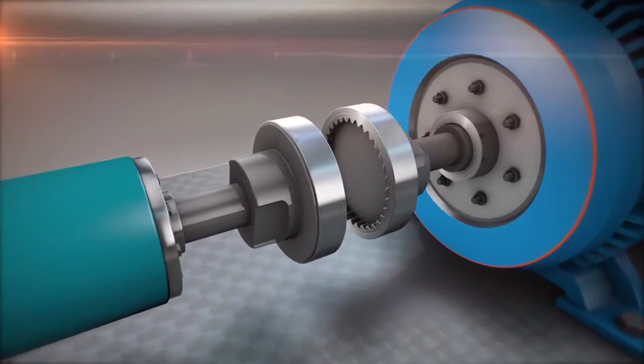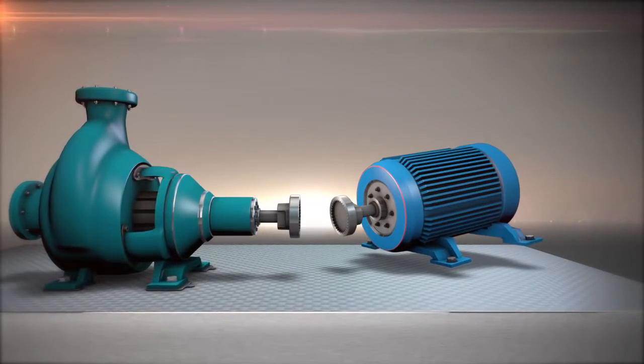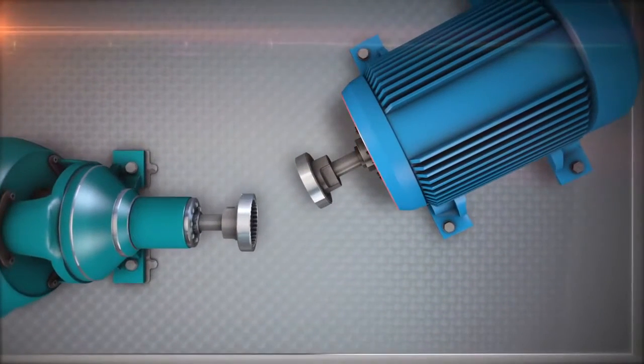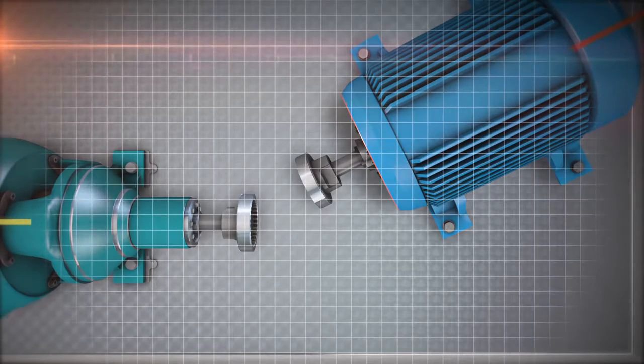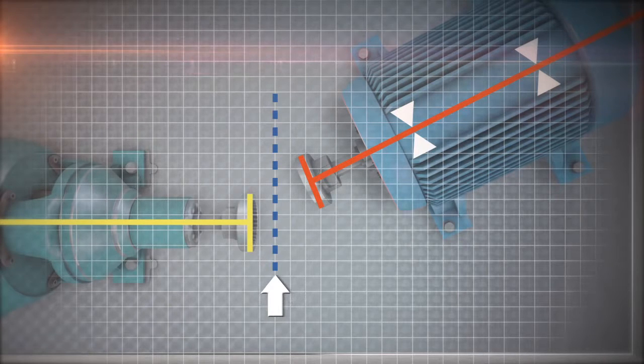Here we see the misalignment in just one plane; however, the same concepts apply equally to both the vertical and horizontal planes. Let's introduce the centerlines of rotation. The center of the coupling is shown here.